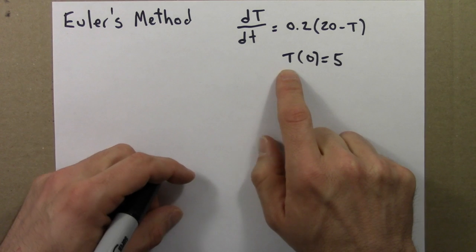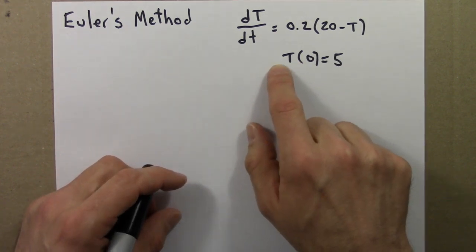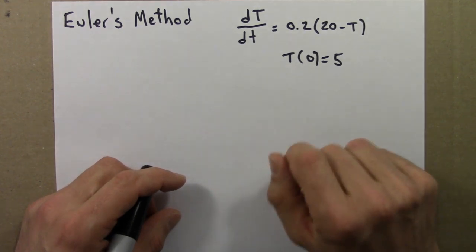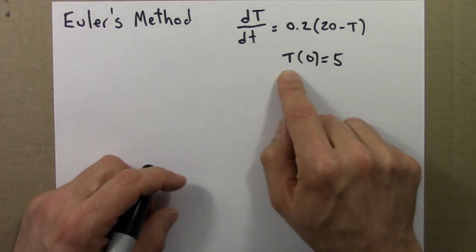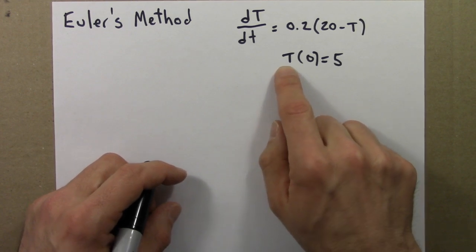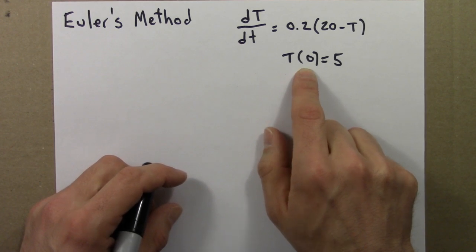We'd like to know the temperature at later times. Would really like to have capital T as a function of time, but in this approach, I'll try to estimate capital T, the temperature, at 2 minutes, 4 minutes, 6 minutes, and so on.